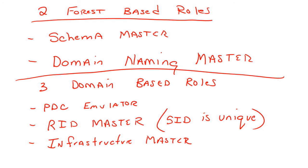These are the five roles. If you want to transfer these roles while the machine is up and running, it's a very easy process. You go into Active Directory, go to Operational Master roles, select which role you want to change, and change it. It's very simple.